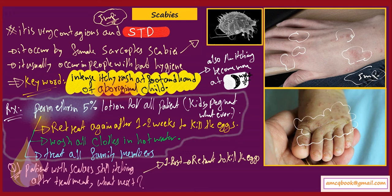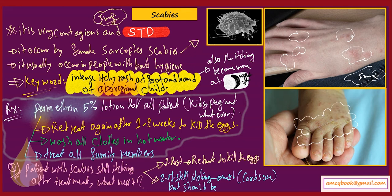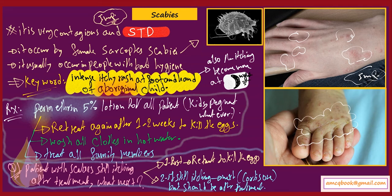If the patient returns and still has itching after two courses of treatment, then the next step is cortisone cream. However, you should never give cortisone cream until the patient has completed two courses of permethrin, one to two weeks apart. This is a very recurrent and common question in the AMC exam.